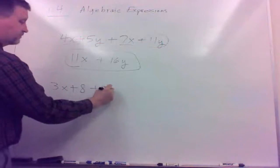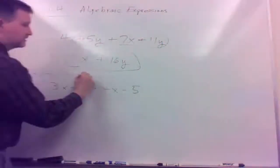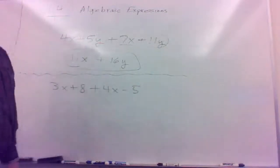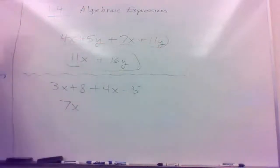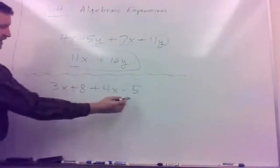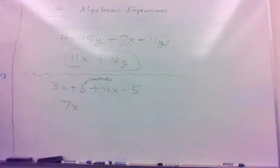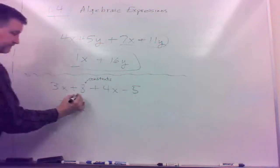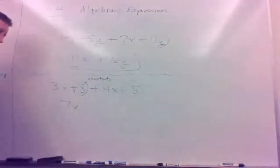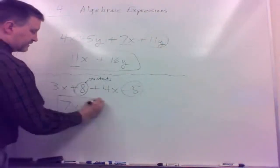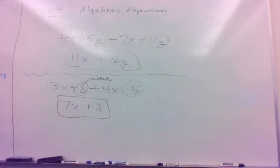Similarly, for 3x plus 8 plus 4x minus 5, we have some like terms. 3x and 4x combine to give 7x. Now let's talk about the 8 and the 5 — these don't have variables, also known as constants, meaning just numbers without any variables associated with them. Constants are like terms with each other, so 8 minus 5 equals 3. The result is 7x plus 3.